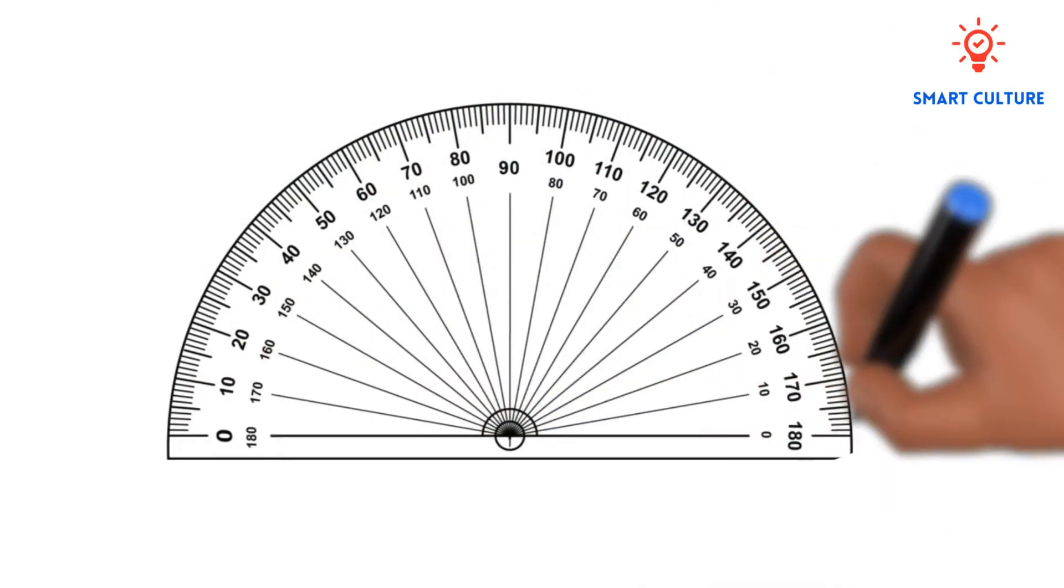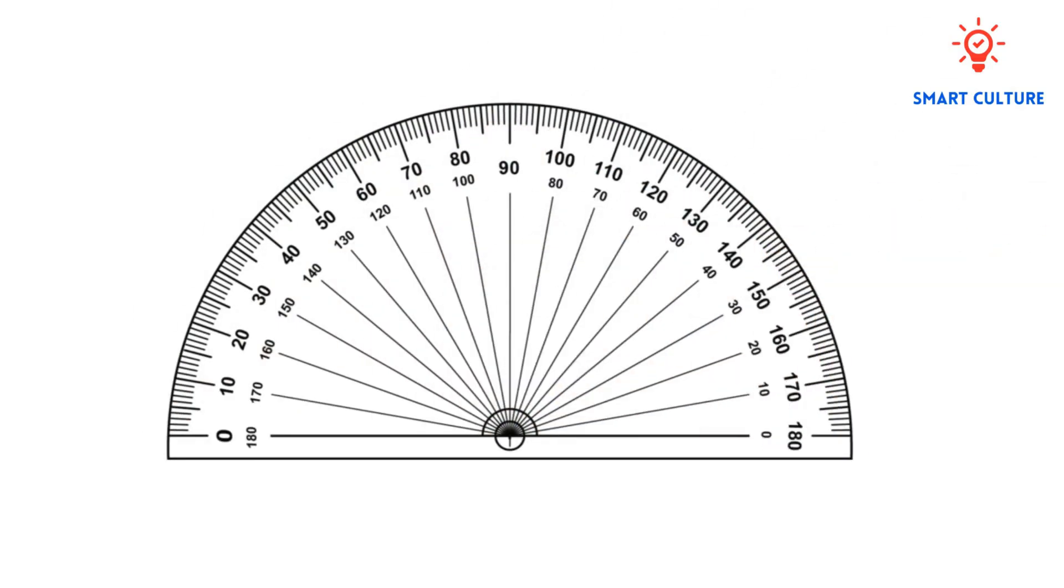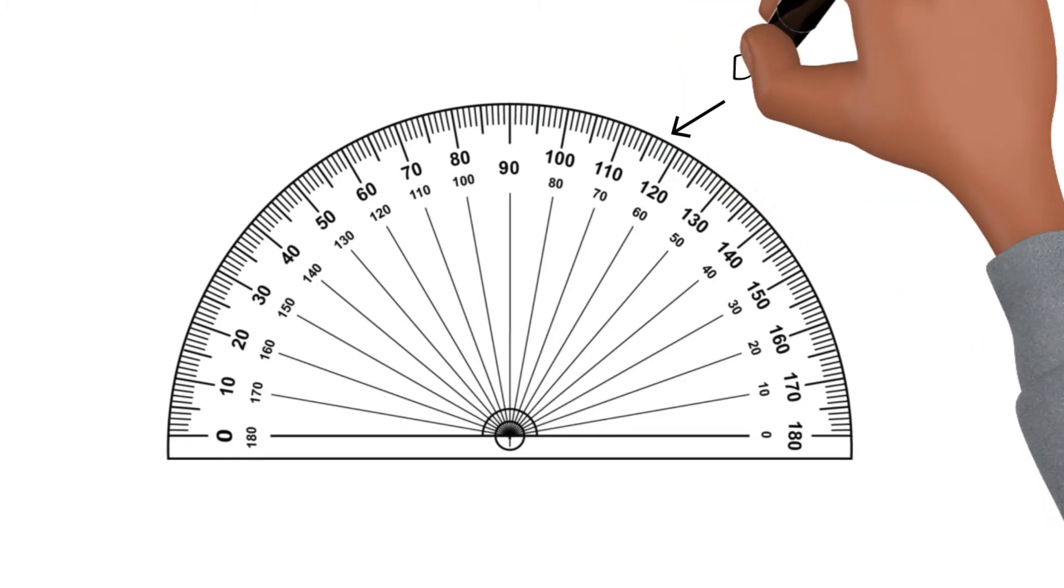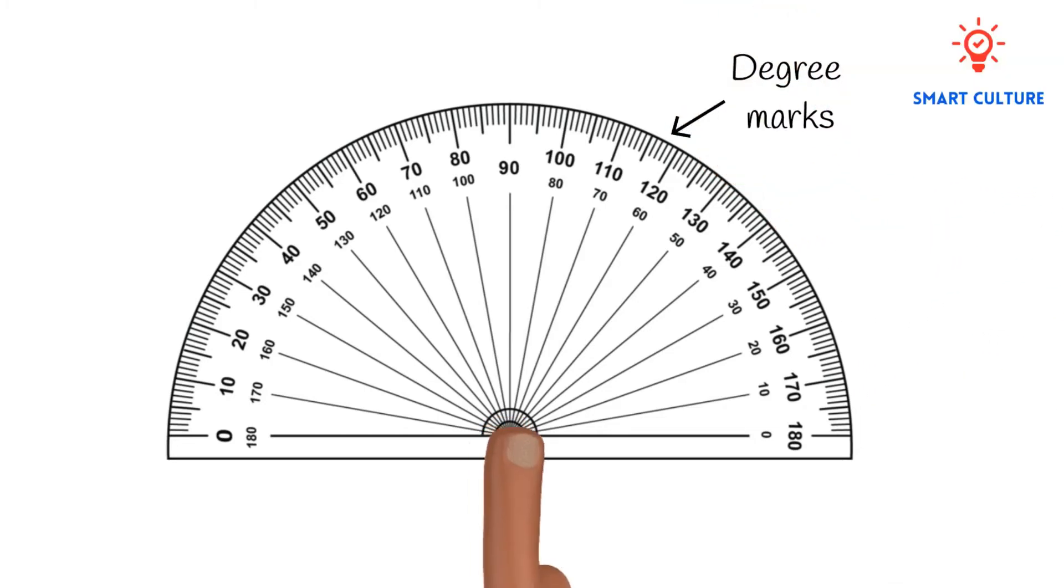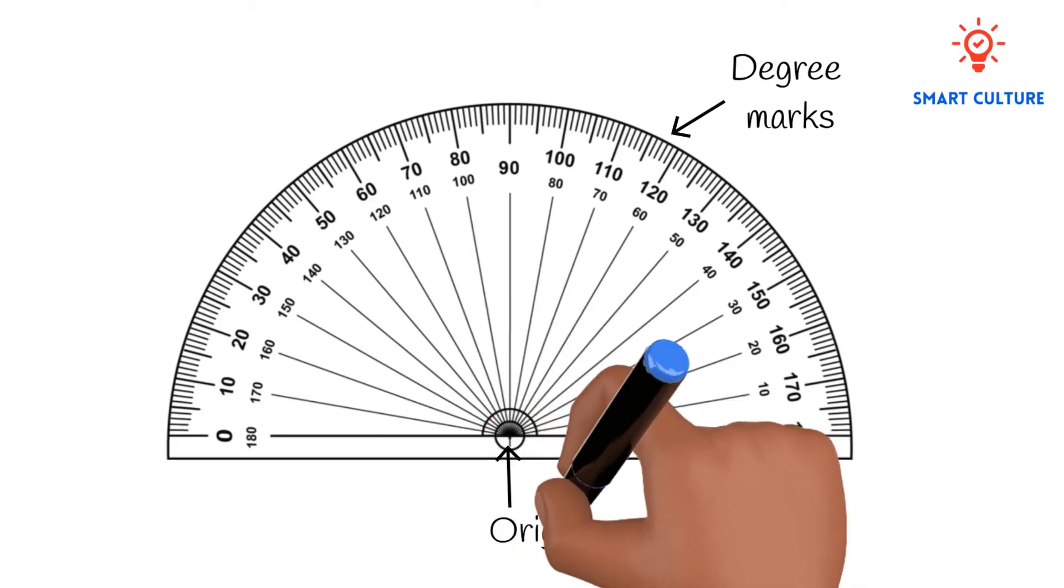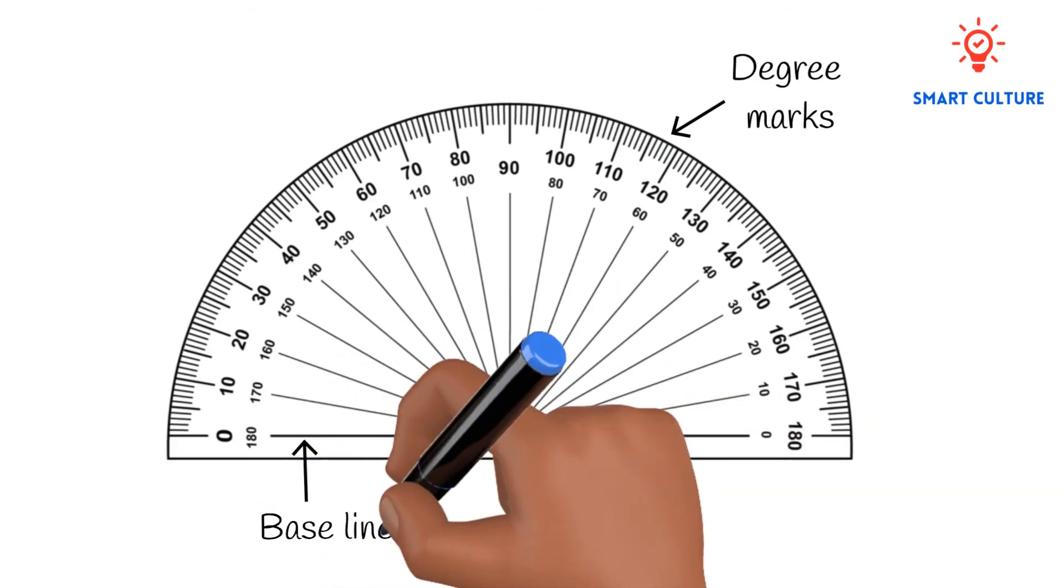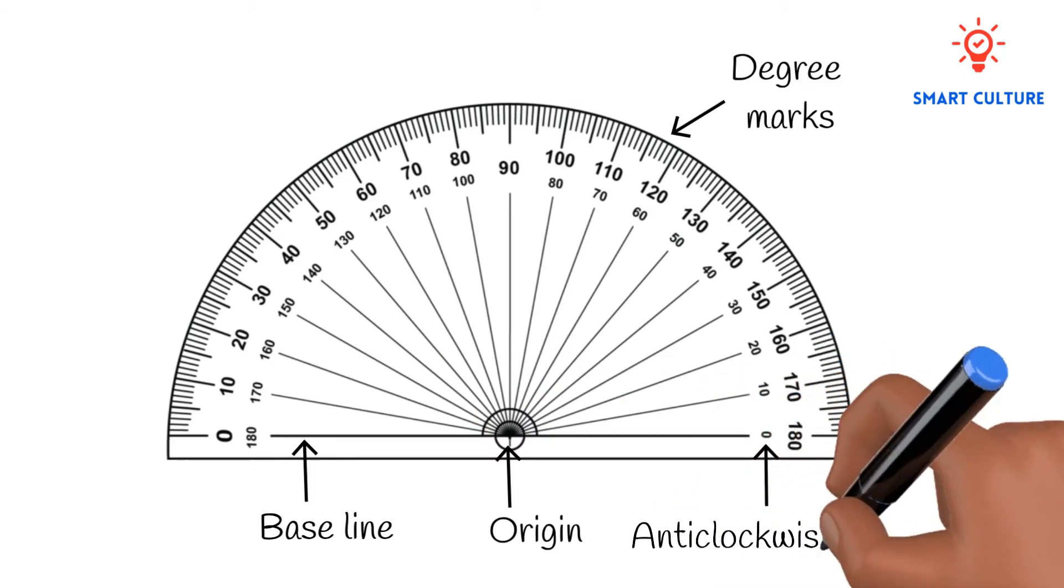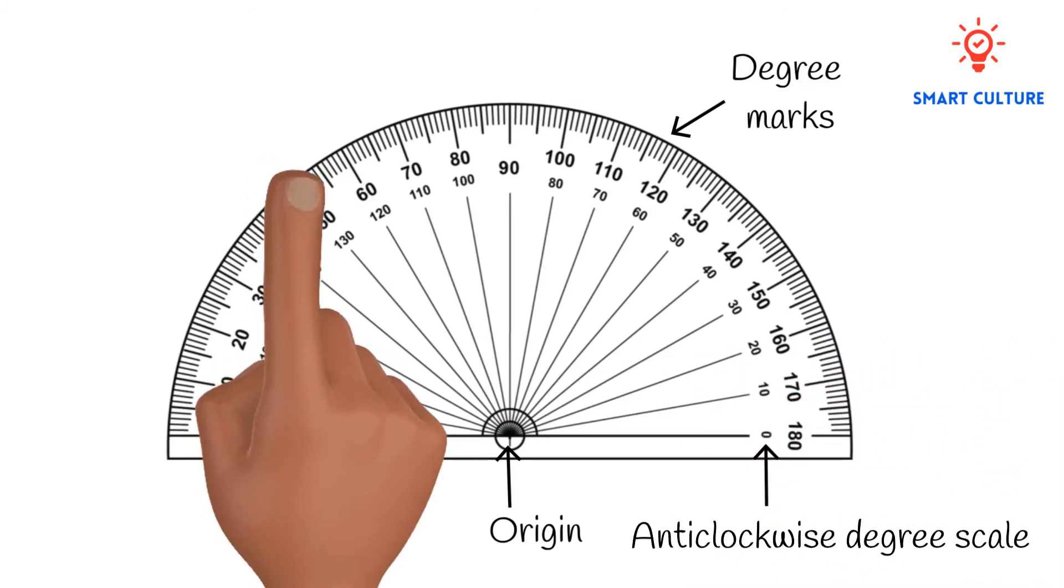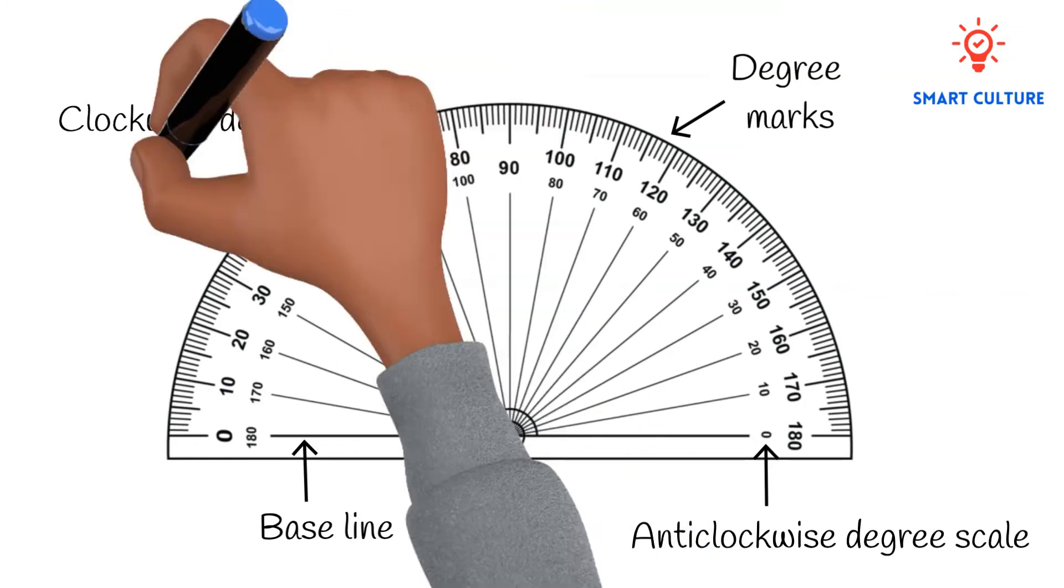Look at the picture of a typical protractor below. On the right you'll see the degree marks. In the middle you'll see the origin. Here is the baseline. This is the anti-clockwise degree scale, and here is the clockwise degree scale.